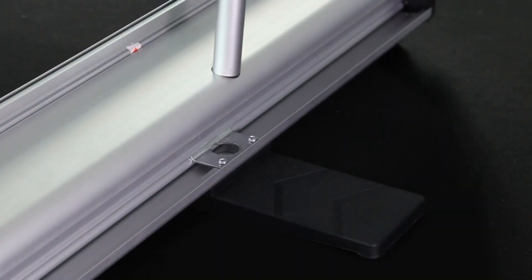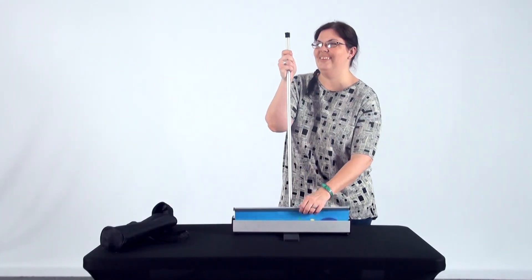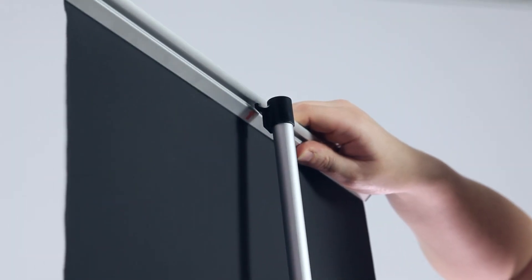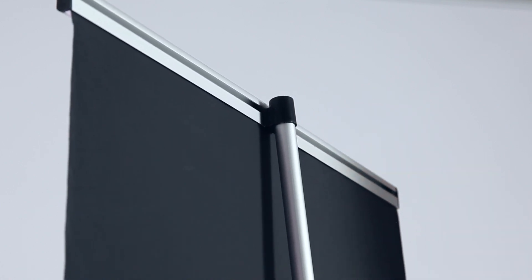Take the metal part of the pole and place it fully into the hole on top of the base. Next, roll the banner up and connect the banner's top rail to the black connecting piece on the support pole.